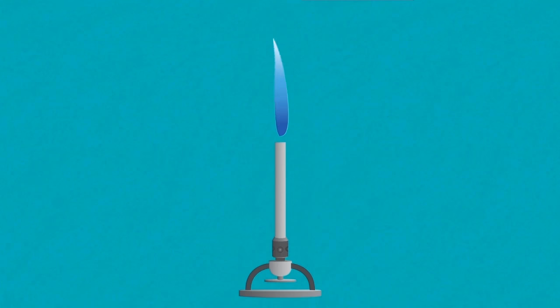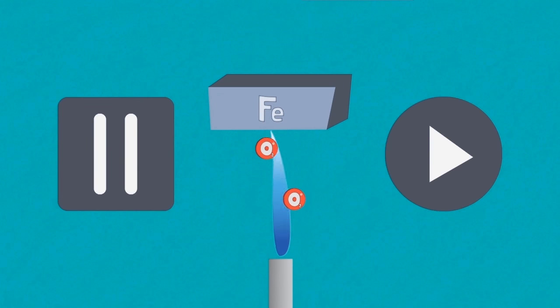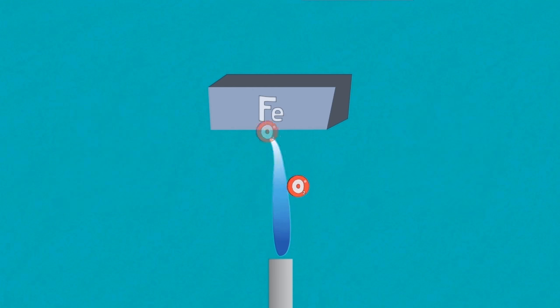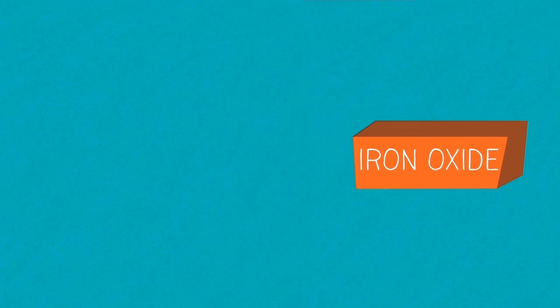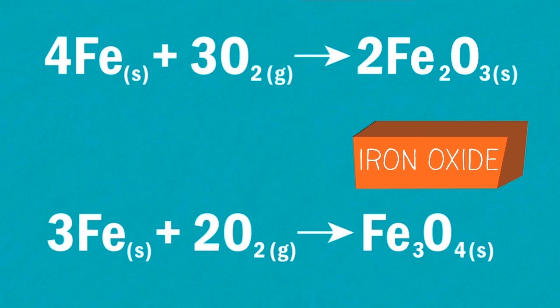What if you were to heat the iron in the air? Pause the video and think about what might happen. Continue when you're ready. On heating with oxygen the result is the formation of iron oxides Fe2O3 and Fe3O4 shown by the following equations.